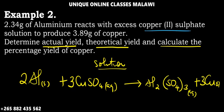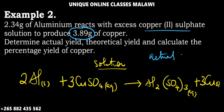The actual yield is the one which we get after doing the experiment. They collected 3.89 grams - that's the actual yield of Cu.